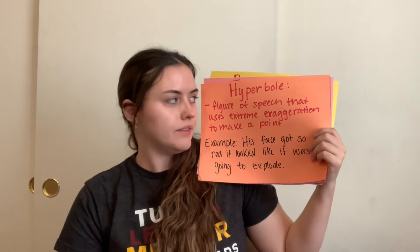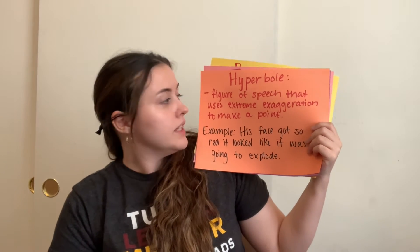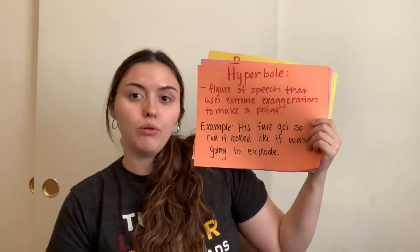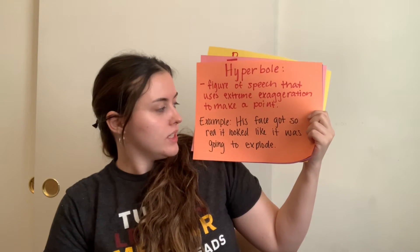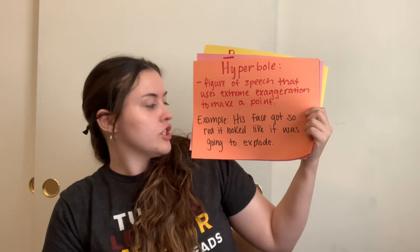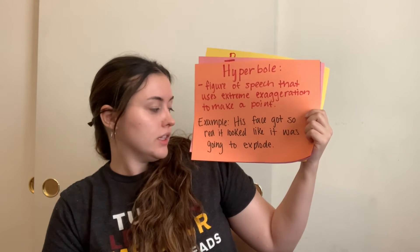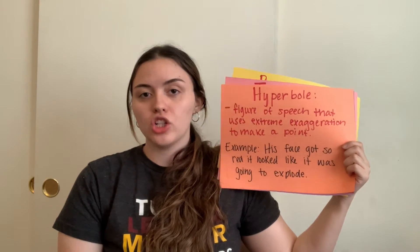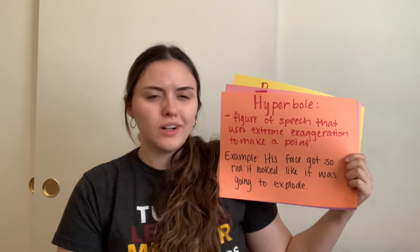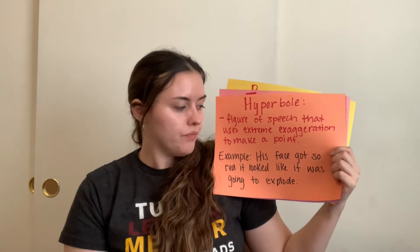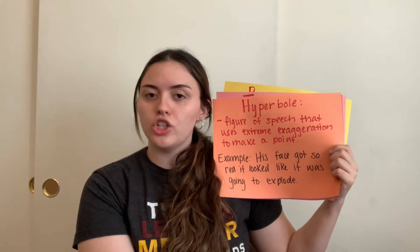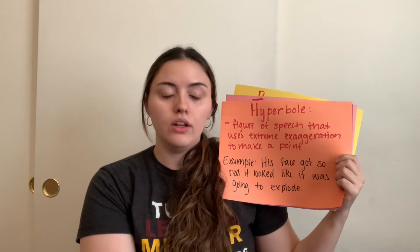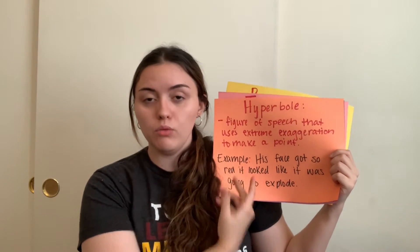Next up we have hyperbole. This is a figure of speech that uses extreme exaggeration to make a point. The example I have today is his face got so red it looked like it was going to explode. We know his face was not actually going to explode, but we use this exaggeration to show how red, embarrassed, or angry the person was.